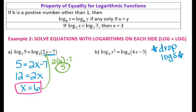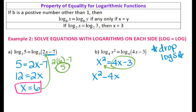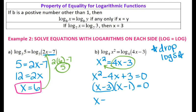For letter B, we have the same logs with the same bases on both sides, so we drop the logs and get x squared equals 4x minus 3. This is a quadratic, so we solve by factoring — move everything to one side to get x squared minus 4x plus 3 equals 0. Two numbers that multiply to 3 and add to negative 4 are negative 3 and negative 1, giving x equals 3 and x equals 1.